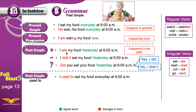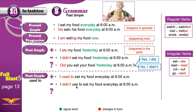Without 'used to,' you can't say 'I ate my food every day' — you'd say 'I ate my food yesterday.' But 'used to' means you've changed your routine. In the past I used to eat at 6, but now I eat at 7. For the negative: I didn't use to eat my food every day at 6 a.m. — don't add -d to 'use.'